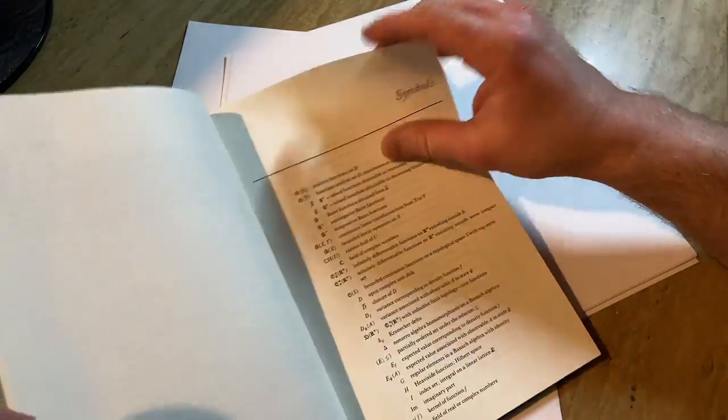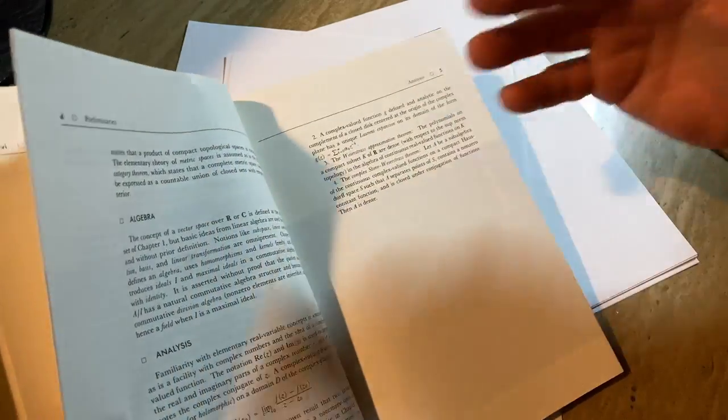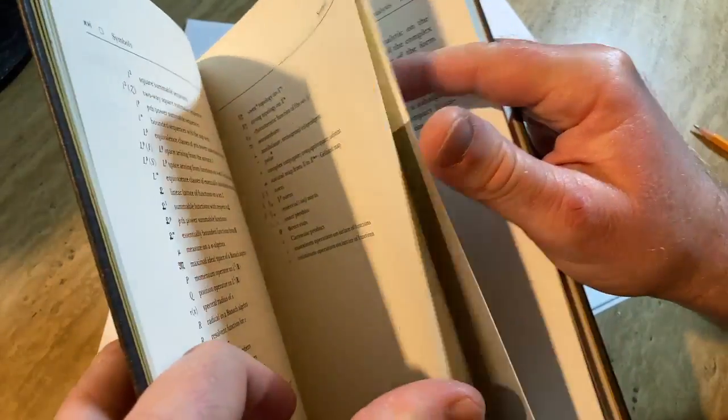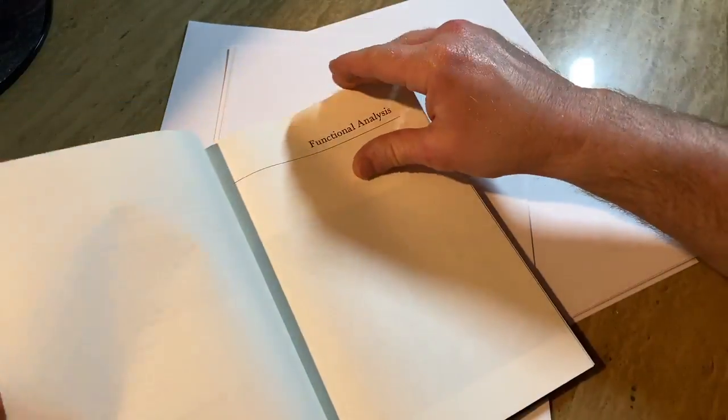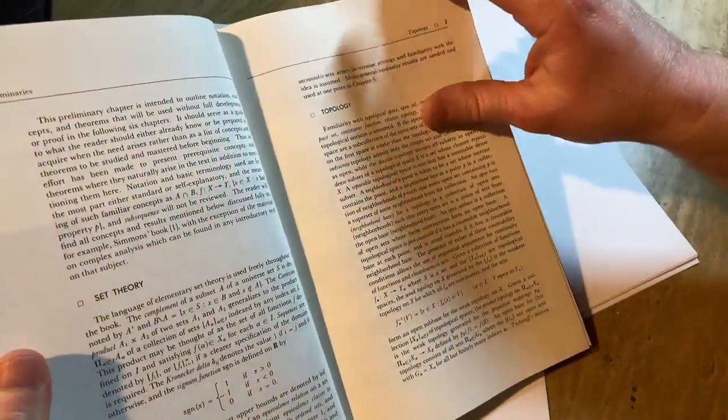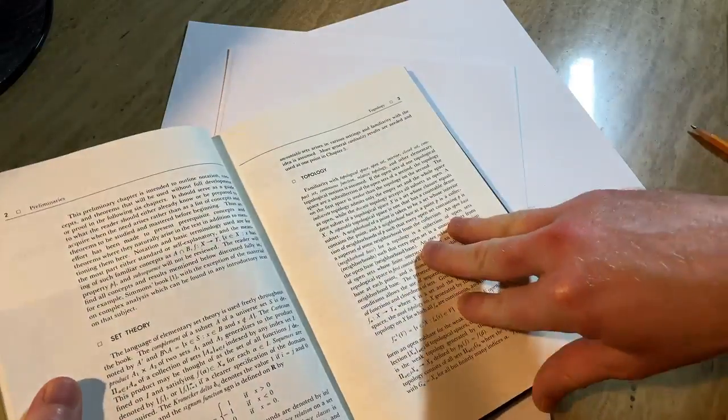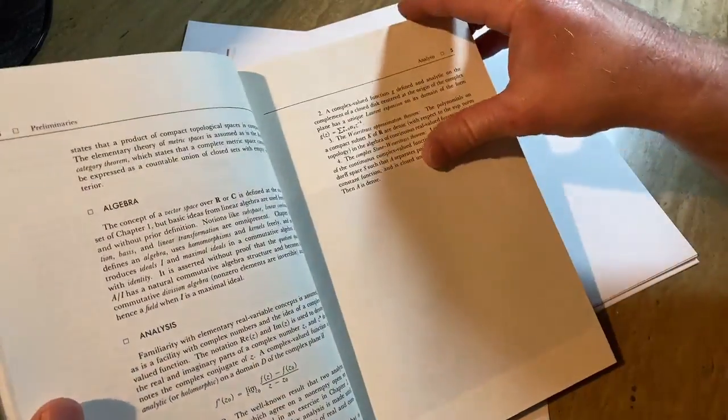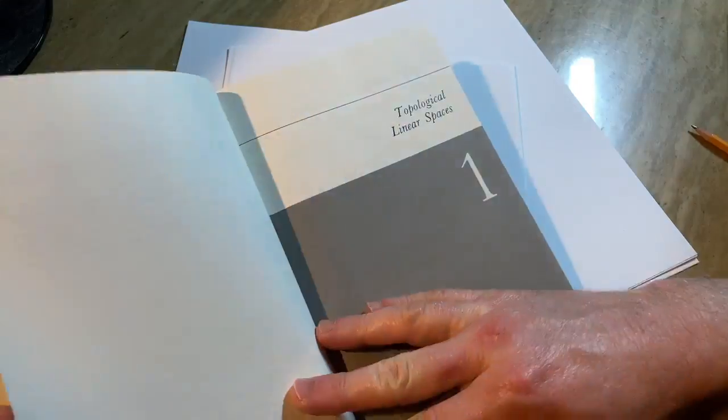Because it's one thing to talk about and say, hey, you should do this and that. It's another thing to actually sit down with a book that is very hard to read for most people and show you how to read it. So let's go to the beginning here. Talks about set theory, topology, analysis. Okay. Then here we go.